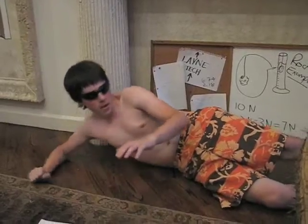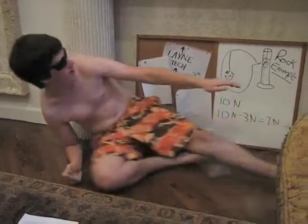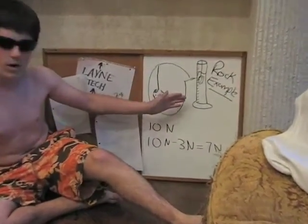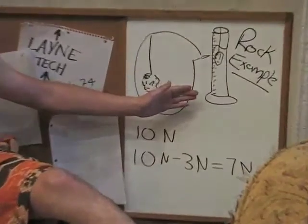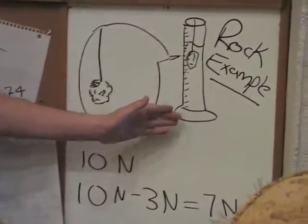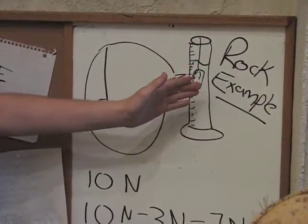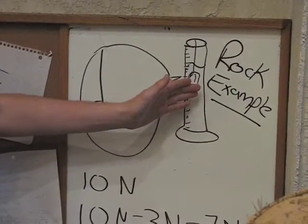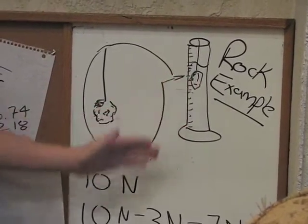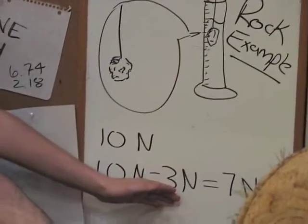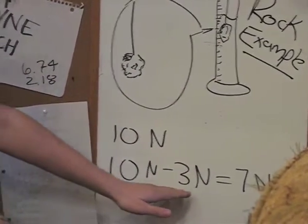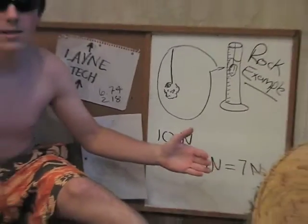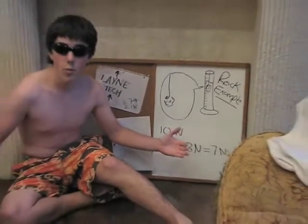For example, take a rock that weighs 10 newtons. Archimedes' Principle states that the buoyant force pushing it upwards will equal the amount of water weight it displaces. Let's say that's 3 newtons. So 10 newtons minus 3 newtons equals 7 newtons — which is basically why it's easier to lift things in water.